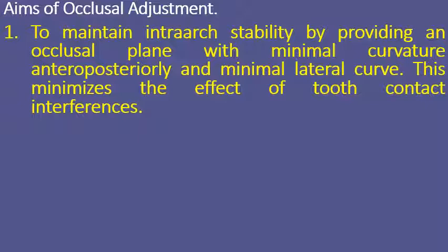Why should we minimize the anteroposterior and mediolateral curves of artificial dentition? So that the effect of tooth interferences will be minimized. You can do your correction more simply if you have a flattened curve rather than a steep one.